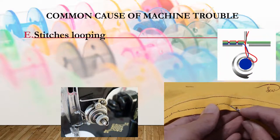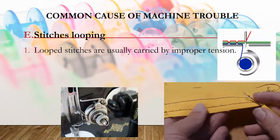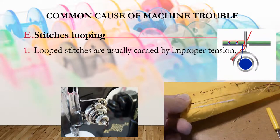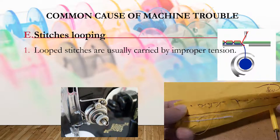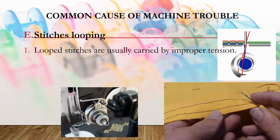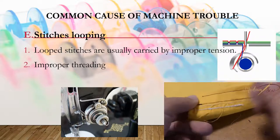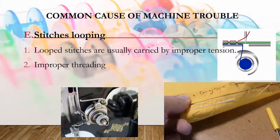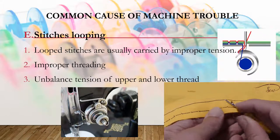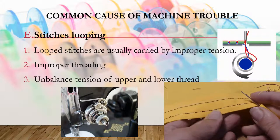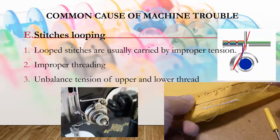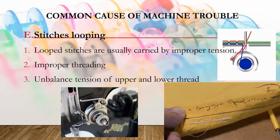Another sewing machine problem is when the stitches are looping. Looping stitches are usually caused by improper tension. You should properly set the tension and check it before using the sewing machine. Another cause is improper threading; always check that your sewing machine is properly threaded. Unbalanced tension between the upper and lower thread also causes looping, so always check both tension settings.